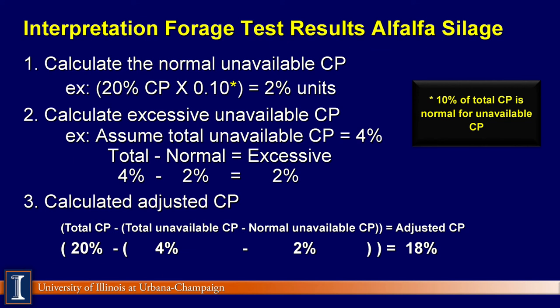Second, determine the amount of excessive unavailable crude protein. Excessive unavailable crude protein is estimated by determining the acid detergent fiber nitrogen in this alfalfa and multiplying by 6.25 to estimate acid detergent fiber crude protein. This provides an estimate of the total unavailable crude protein in the alfalfa. If the assayed total acid detergent fiber crude protein is greater than the normal acid detergent fiber crude protein, then subtract the normal unavailable crude protein from the total unavailable crude protein to determine the excessive unavailable crude protein.